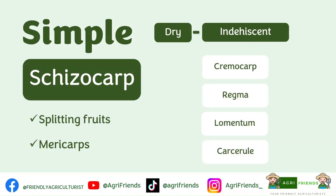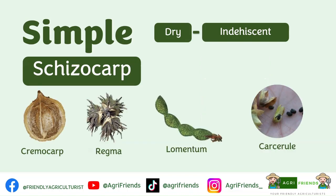A schizocarp is a fruit formed from several carpels, each carpel enclosing a single ovule. At maturity, the carpels separate into mericarps — one mericarp is equivalent to one carpel. There are several types of schizocarp.